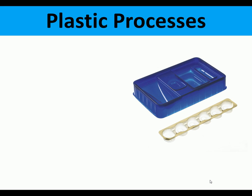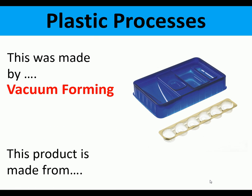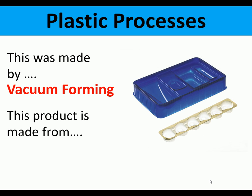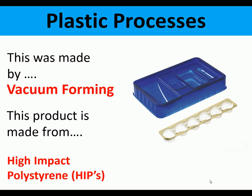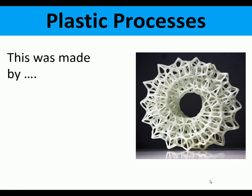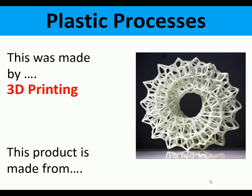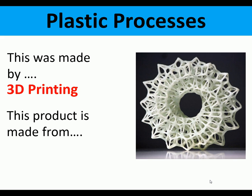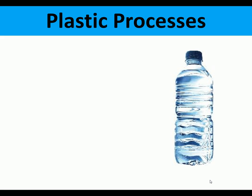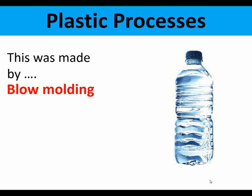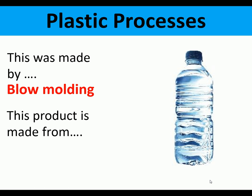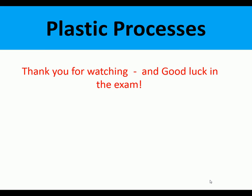Plastic processes identification: this product was made by vacuum forming and is made from high impact polystyrene (HIPS). This product was made by 3D printing and is made from PLA. This product was made by blow molding and is made from PET. That was plastic processes — thank you for watching and good luck in the exam.